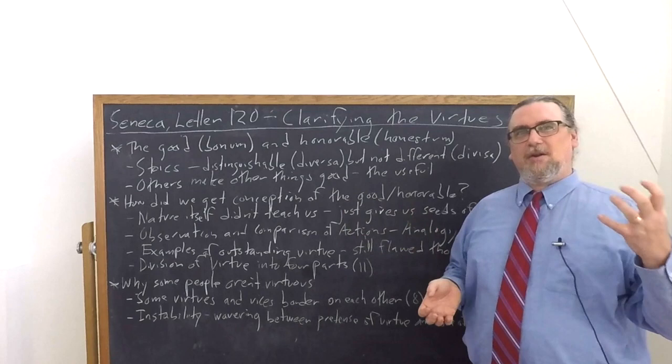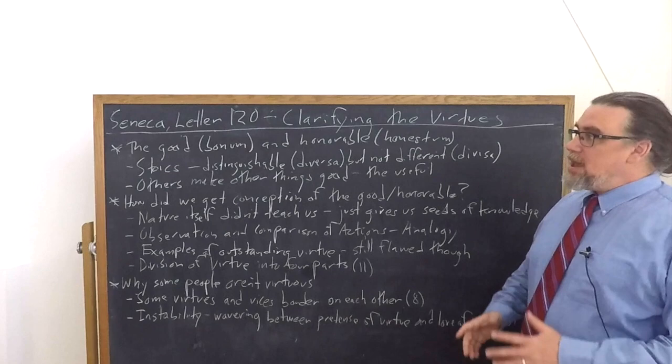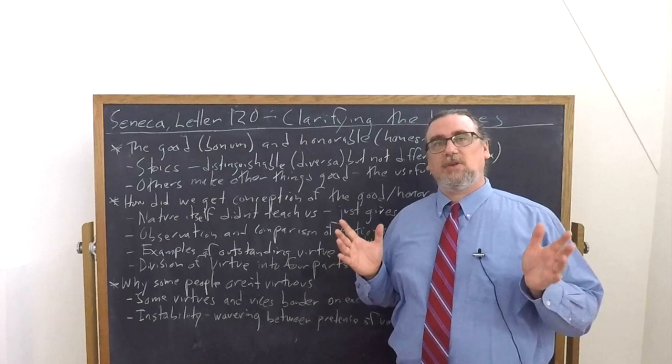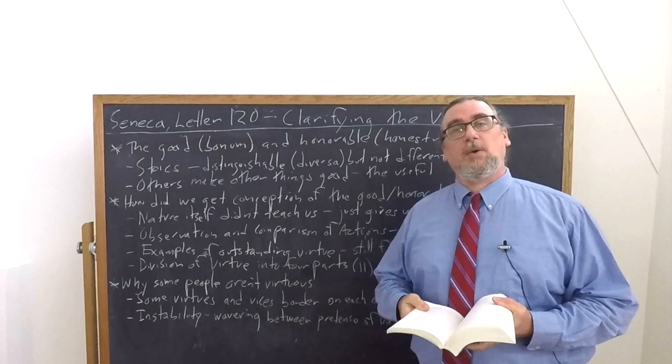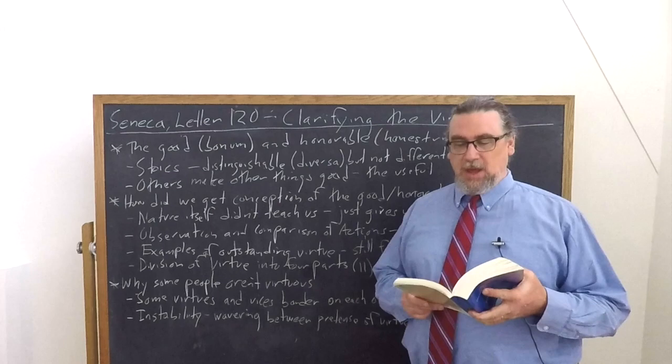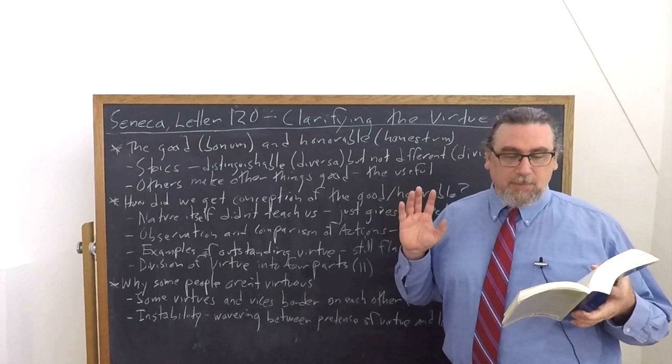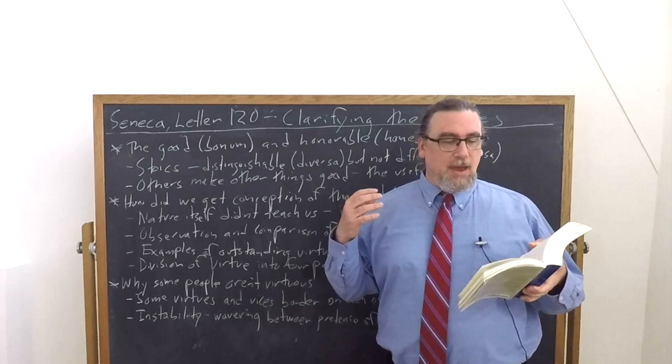And he's going to contrast this to other philosophical views, and indeed the common sense views of many human beings, where they do make other things good. They will call them goods. And the Stoics would say, well, you can call them good, but they're not really good. So you're misusing that term. Here's what he gives as an example. The good for some people is just what is useful, utile in Latin, and thus they apply the term to wealth, to a horse, to a wine, to a shoe.